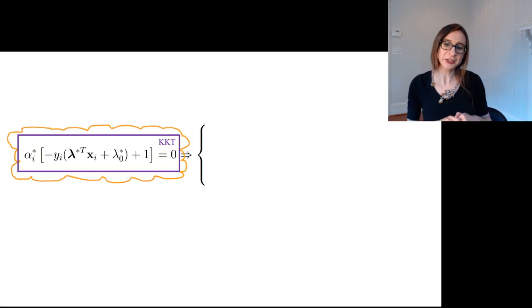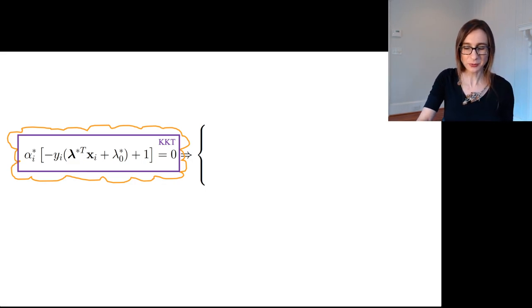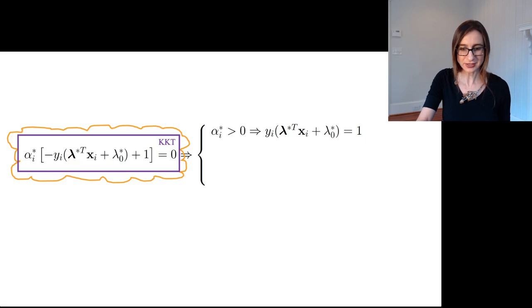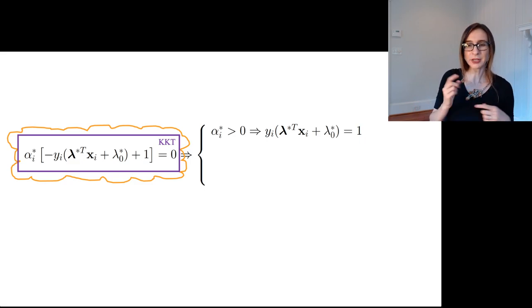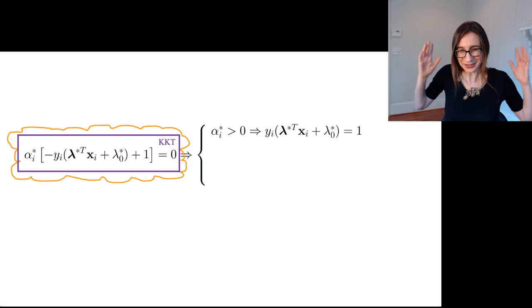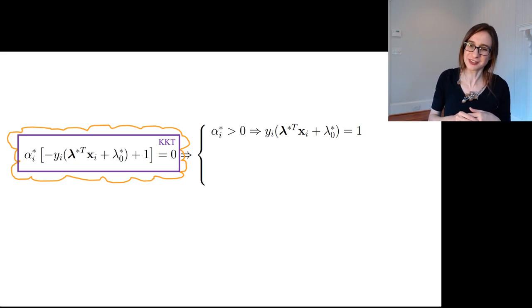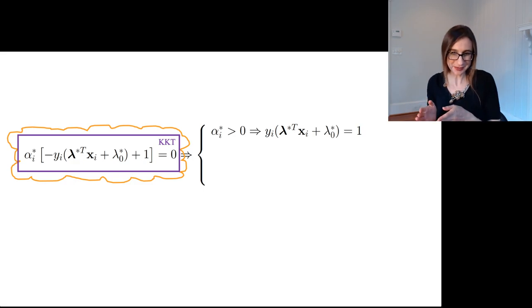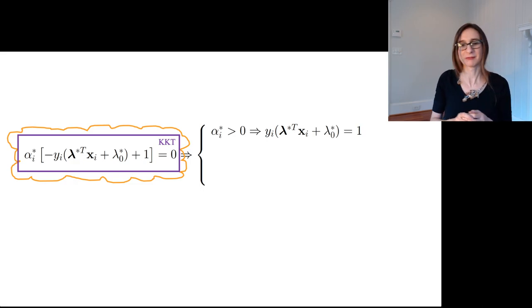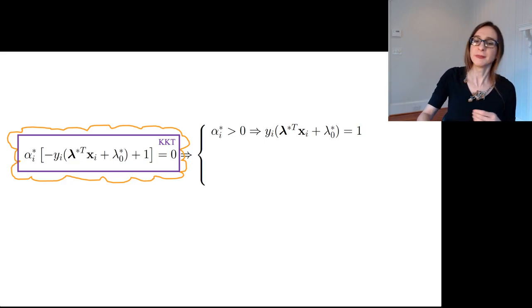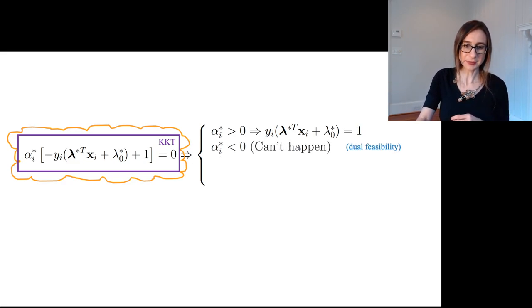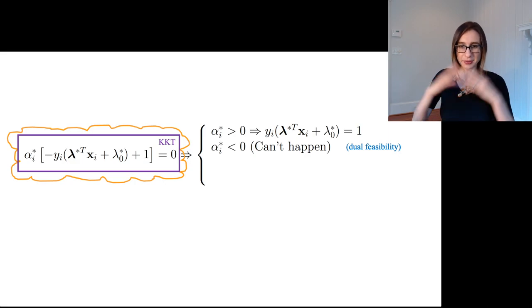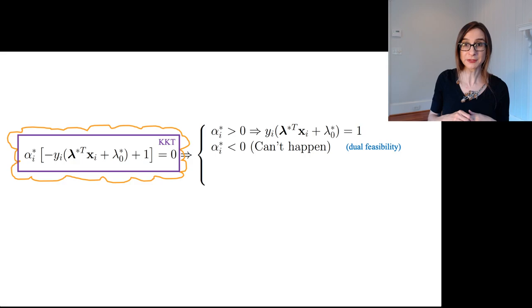Let's take a look at the complementary slackness condition. This condition has some really cool implications. So there are two terms here, and their product is equal to zero. So if one of them is non-zero, well, there are only a few possibilities. Let's say that alpha star is positive, strictly positive. In that case, the other term has to be zero, which means that y times that thing equals one. Another possibility is that the alphas are strictly less than zero. But that's not a possibility, because as we know, the alphas are always greater than or equal to zero. So it can't happen.